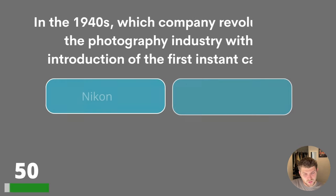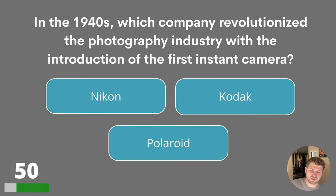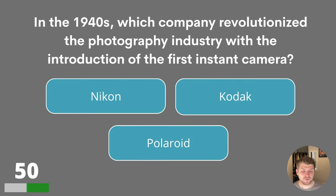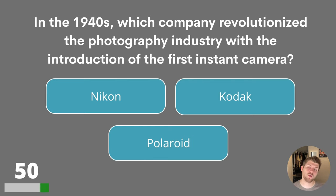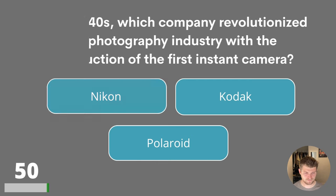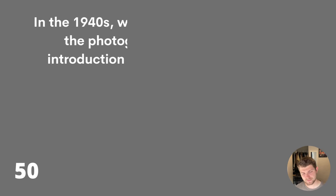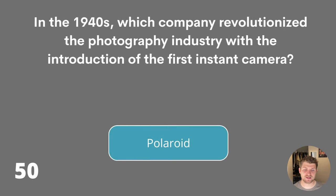Question fifty. In the 1940s, which company revolutionised the photography industry with the introduction of the first instant camera? Was it Nikon, Kodak or Polaroid? The answer is Polaroid.